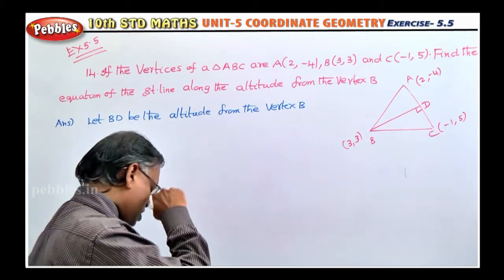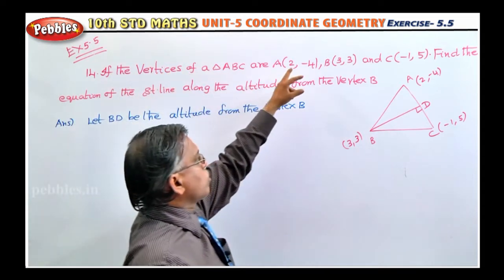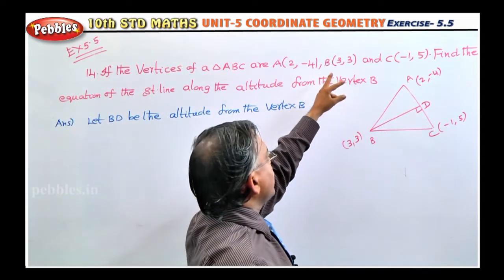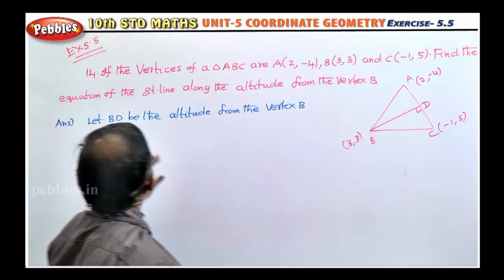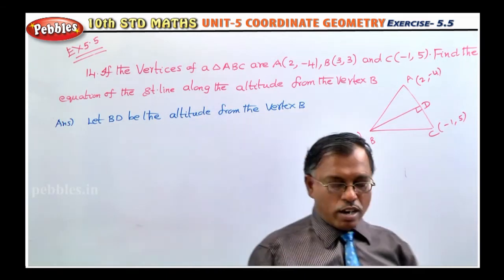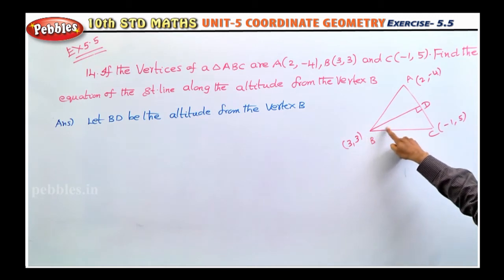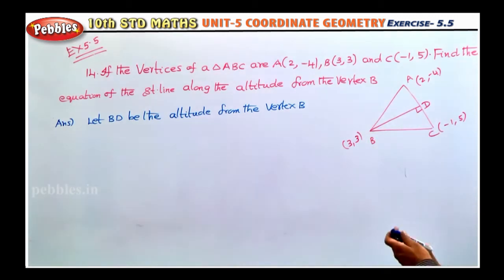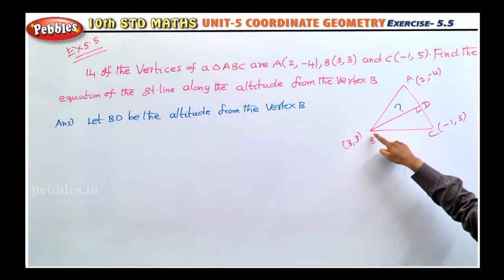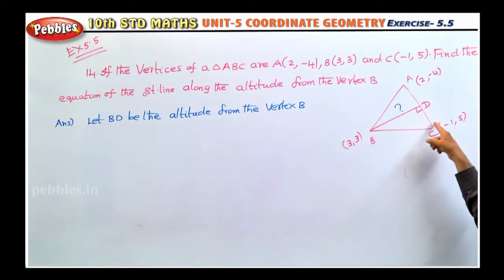We will see the fourteenth problem, which is very important — a five mark question. The vertices of a triangle ABC are A(2, -4), B(3, 3), and C(-1, 5). Find the equation of the straight line along the altitude from the vertex B. So BD is the altitude from vertex B. An altitude is a perpendicular drawn from the vertex to the opposite side, so BD is on the side AC.